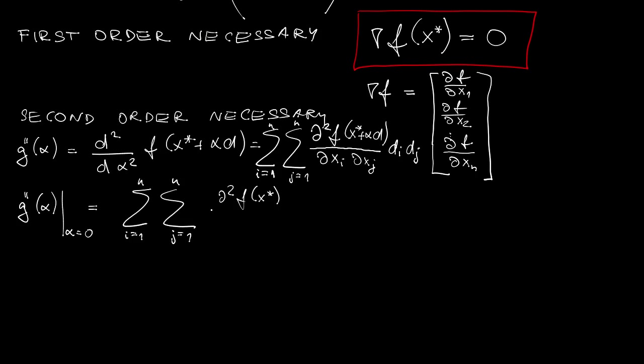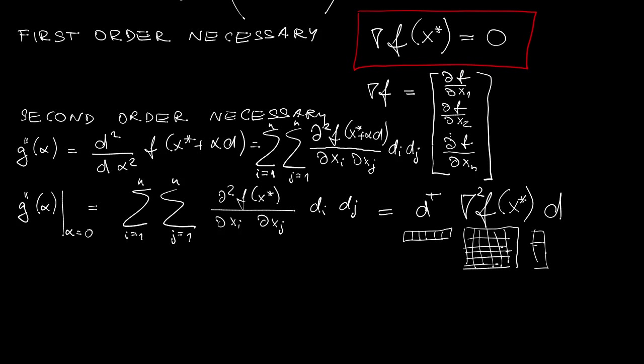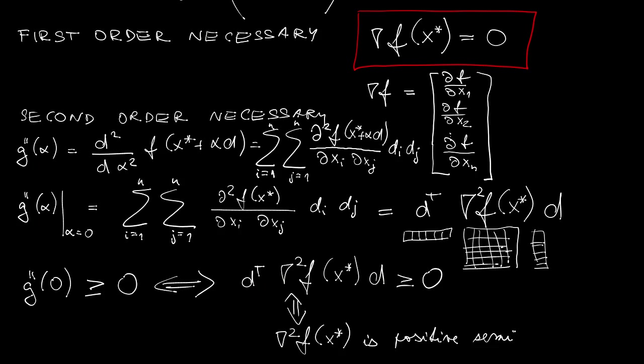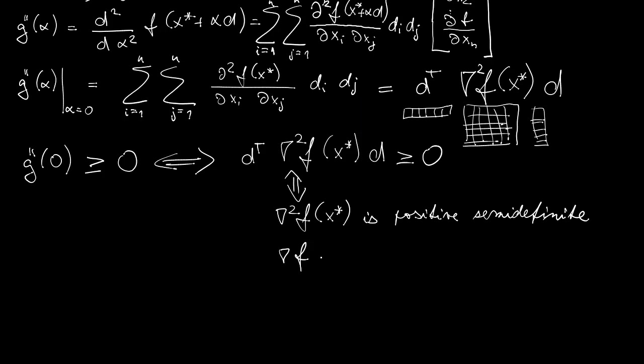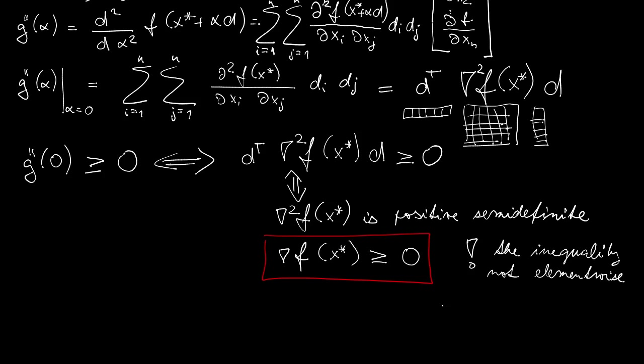Again, sum of second partial derivatives, which again we can rewrite in this convenient matrix vector notation as d transpose times nabla squared times d, where the middle term is a matrix. We call this matrix Hessian. Now if the necessary condition of optimality is that the second derivative of g evaluated at 0 should be non-negative, then our quadratic matrix form should be non-negative. But then this translates to the statement about the middle term, which is nabla squared, and that is that it should be positive semi-definite.